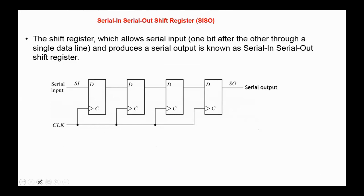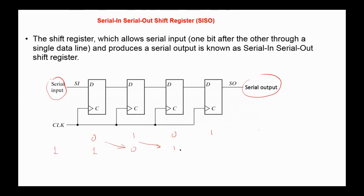In the serial-in serial-out shift register, we have one serial input and one serial output, and the clock pulse is applied to all flip-flops. On each clock pulse, the contents of the register are transferred one position to the right. For example, if the content of the register was 0101 and the serial input was 1, then after the first clock pulse, the contents will be 1010 and the LSB is shifted out.